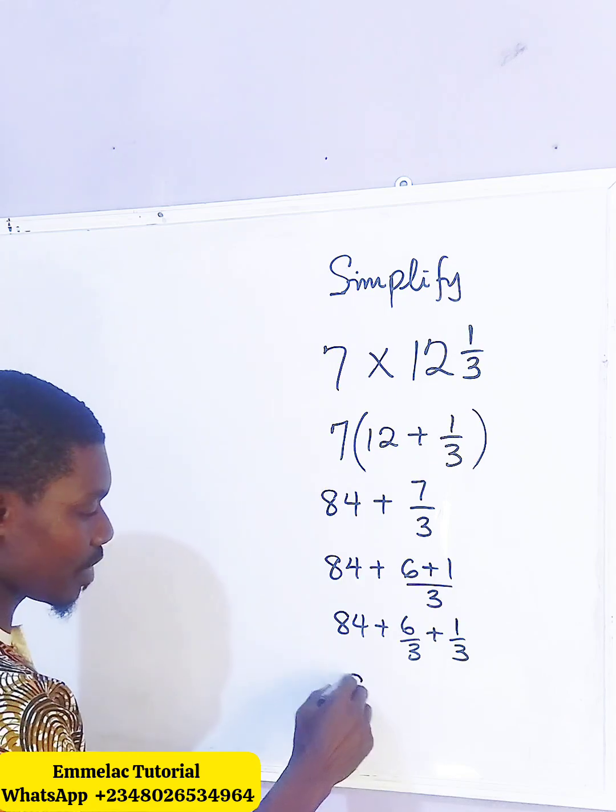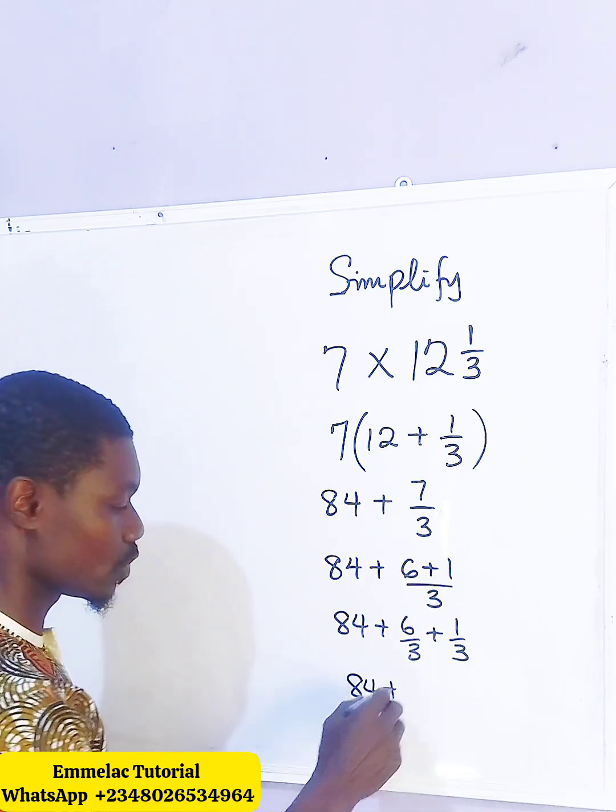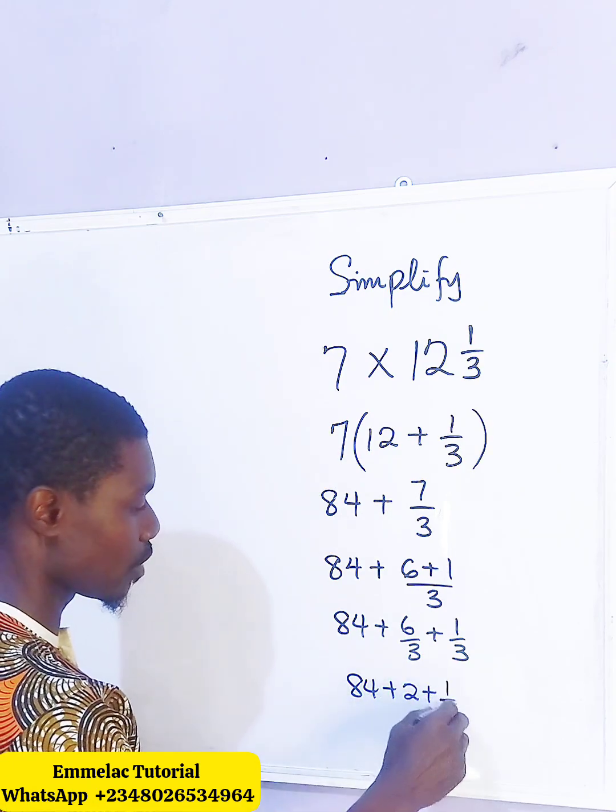So at this point we have 84 plus 6 divided by 3, that will give us 2, plus 1 all over 3.